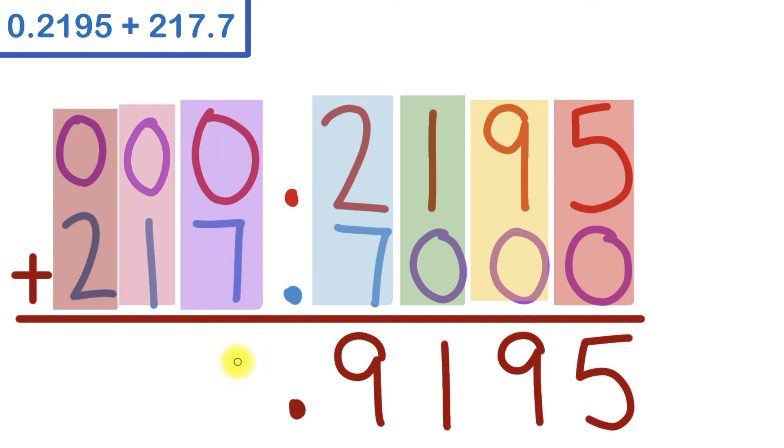0 plus 7 is 7. 0 plus 1 is 1. And 0 plus 2 is 2. Making our final answer 217 and 9,195 ten-thousandths. But most students read this as 217.9195.